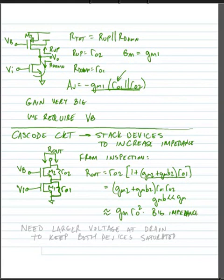Now what's the cost? Everything that we do in engineering where we get something good, we usually have to give up something else that we desire. And the cost is I now need a larger voltage at the drain to keep both devices saturated.